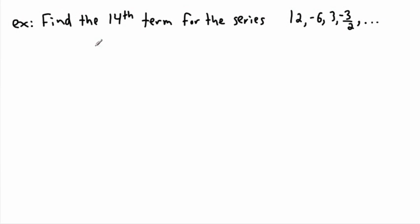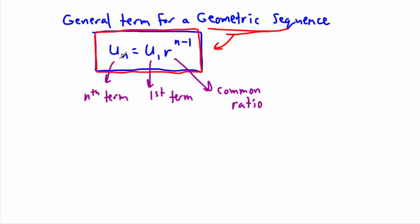We can see the general term in action by using this example here. Remember the general term was just un equals u1 times r to the power of n minus 1 if it's geometric.